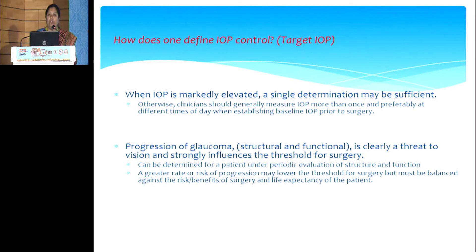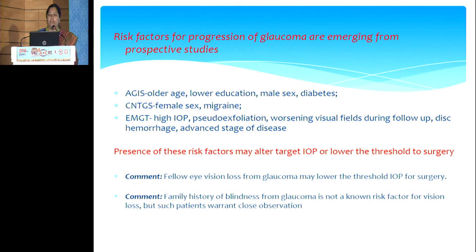A greater rate or risk of progression may lower the threshold for surgery, but must be balanced against the risk or benefit of surgery and life expectancy of the patient. Risk factors for progression are emerging from prospective studies. The AGES study identified older age, lower education, male sex, and diabetes as risk factors. The CNGTS determined that female sex and migraine were risk factors. The EMGT found that higher IOP, pseudo-exfoliation, worsening visual fields during follow-up, disc hemorrhages, and advanced stages of disease are greater risks. Presence of these risk factors may alter target IOP or lower the threshold to surgery.